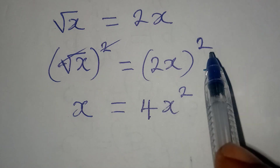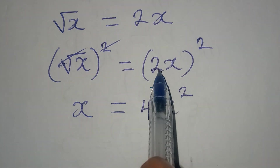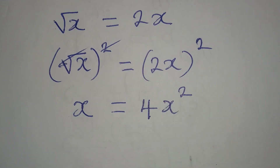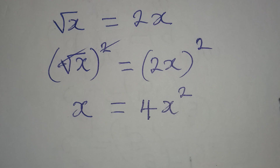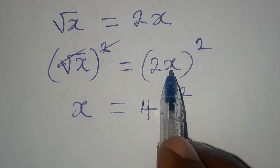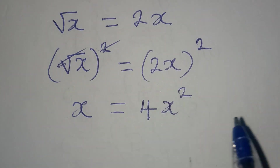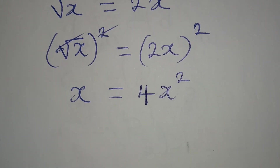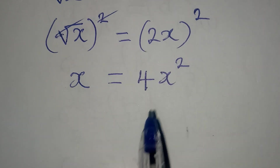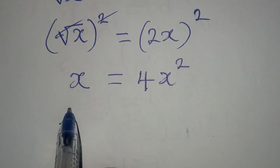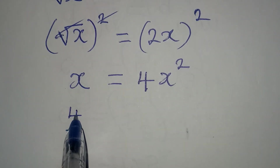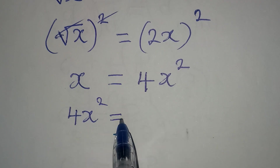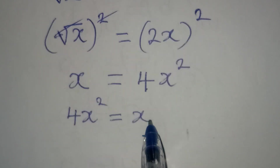Remember, the square here is for 2 and the x. In other words, 2x squared means 2x times 2x. And from here, this is the same thing as 4x squared equal to x.